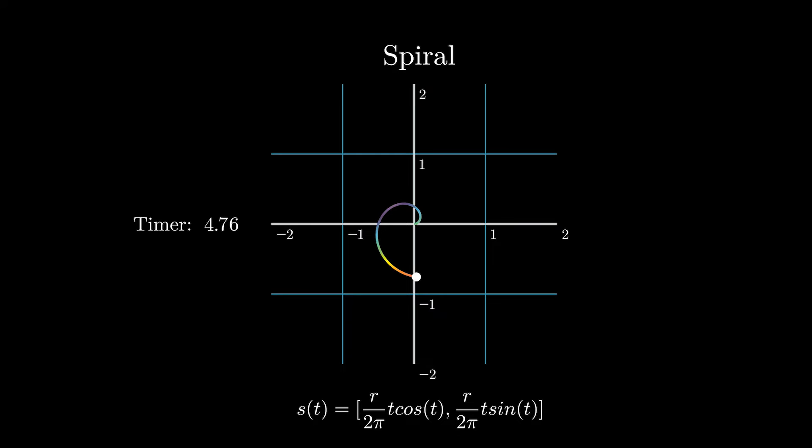And as time moves on, the spiral kind of moves outwards in a linear fashion with respect to time, which is given by that t multiplier in your x land and your y land. It's gonna be circular because of your sine and cos.